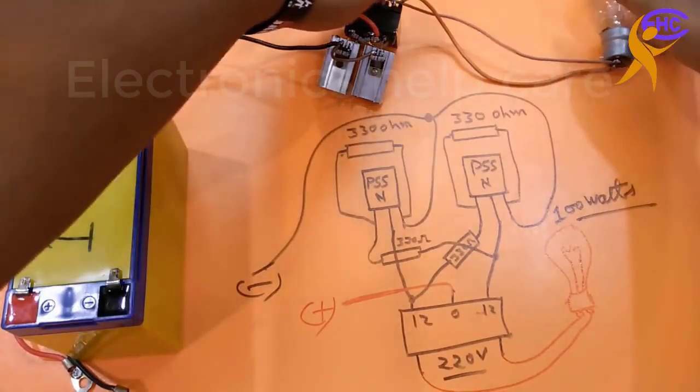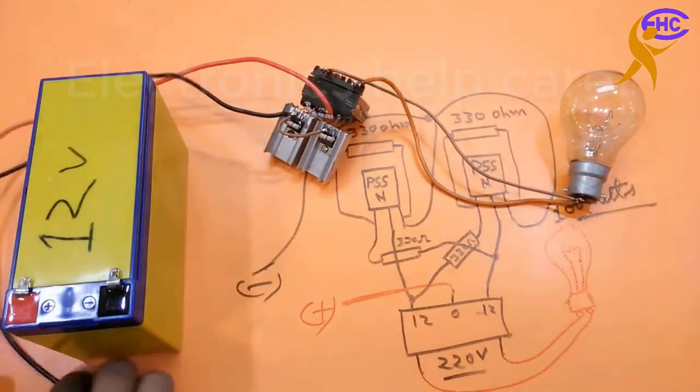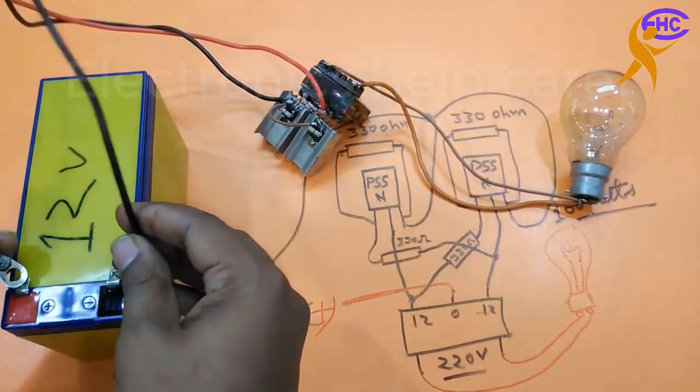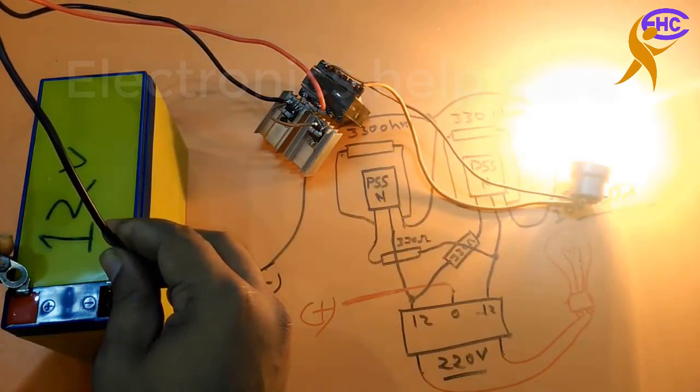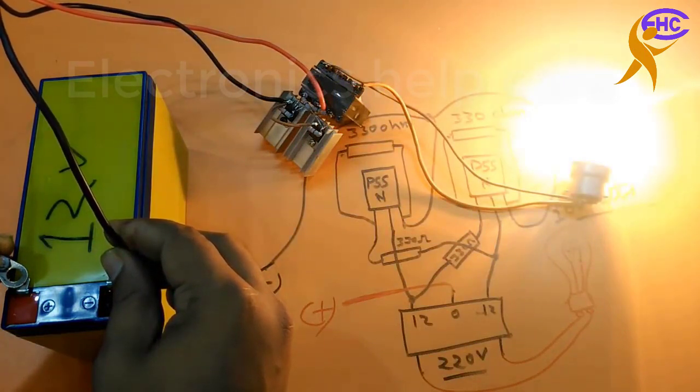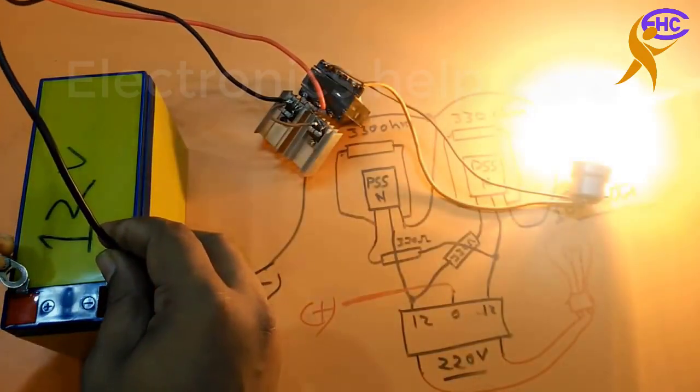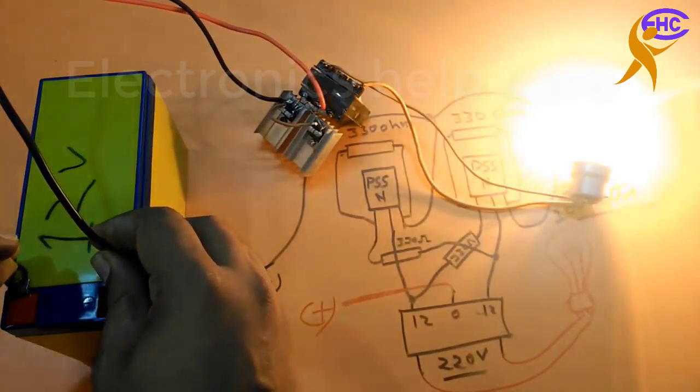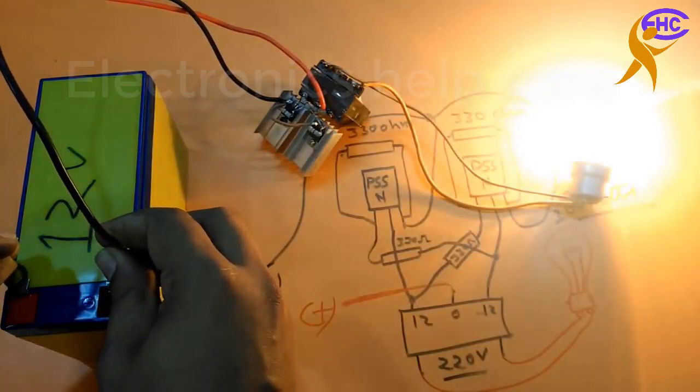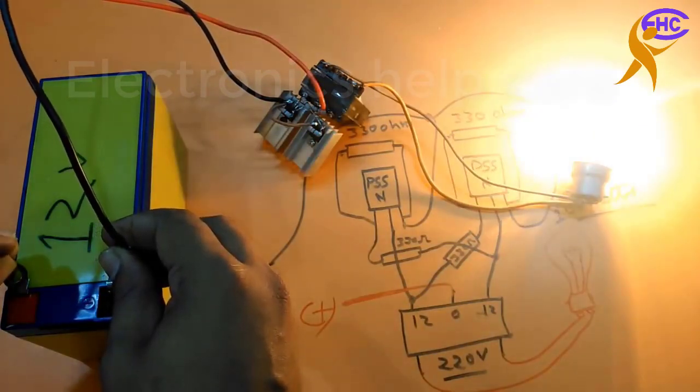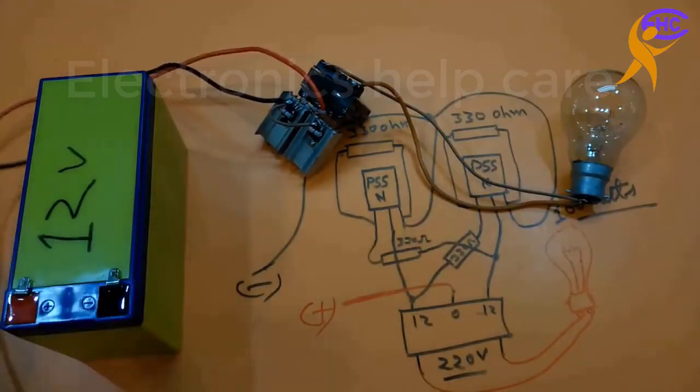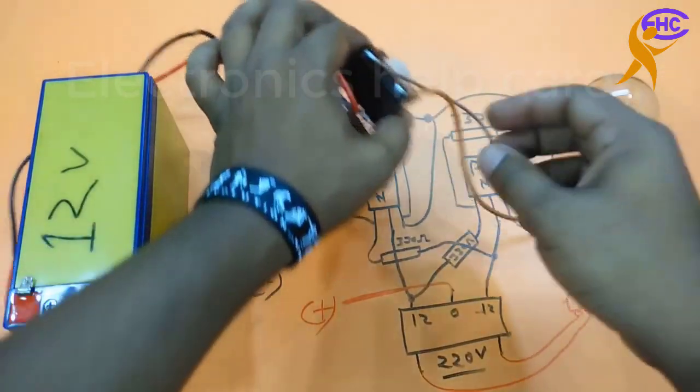The transformer turns will be 15-0-15 for the secondary, and the primary will be 275 turns for 220 voltage. For 12 voltage will be 15 turns and another 12 voltage 15 turns. You can make this inverter, it's very simple.